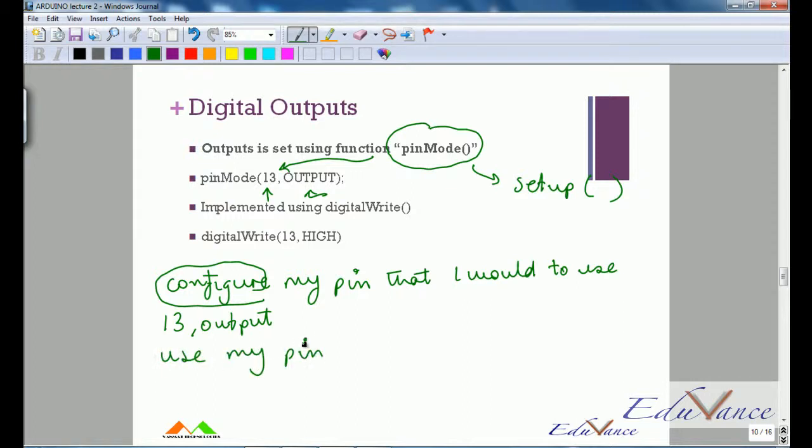Now if I want to use my pin number 13, then if it's output I would use the function digitalWrite. And this is how I would use it: if I want to write the value one—that is bit one or logic high—I would say digitalWrite pin number 13, value HIGH.